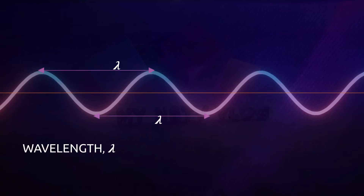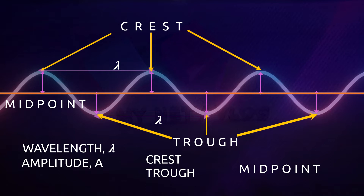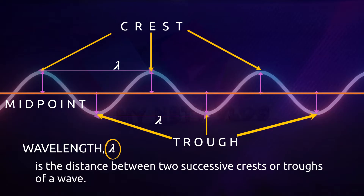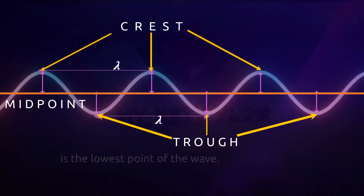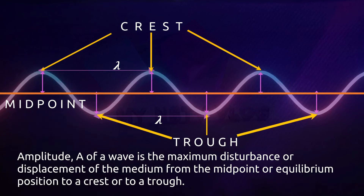The parts of the wave are the wavelength, amplitude, crest, trough, and midpoint or equilibrium position. Wavelength, symbolized by lambda, is the distance between two successive crests or troughs of a wave. Crest is the highest point of the wave, while trough is the lowest point. The midpoint or equilibrium position is the part where there is no disturbance or no wave. The amplitude, A, of a wave is the maximum disturbance or displacement of the medium from the midpoint or equilibrium position to a crest or a trough.